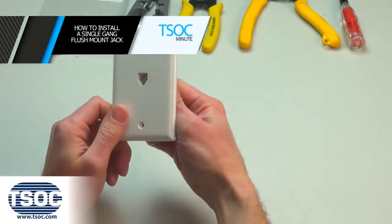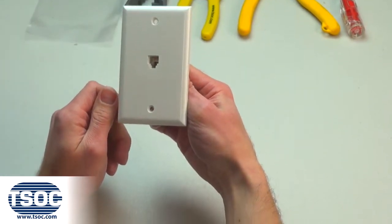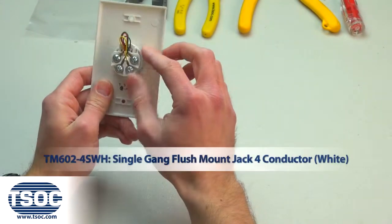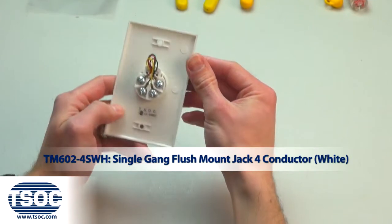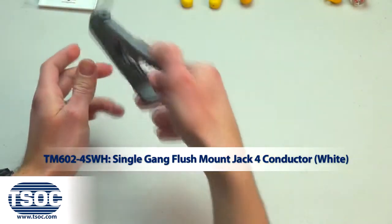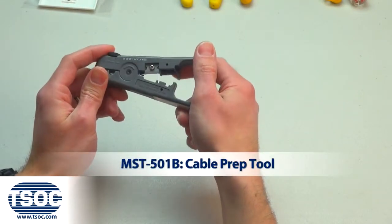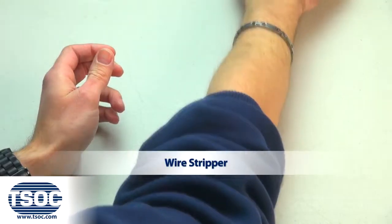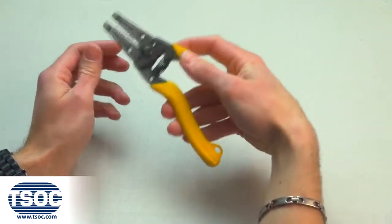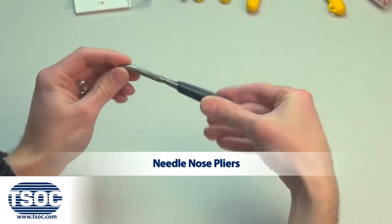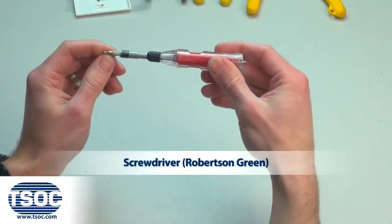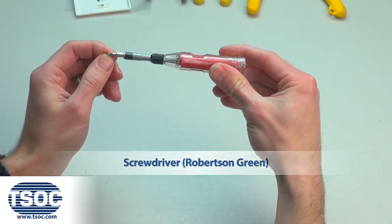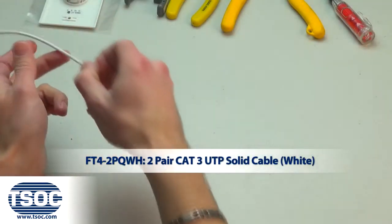How to install a single gang flush mount jack. Materials required: single gang flush mount jack four conductor in white, cable prep tool, wire stripper, needle nose pliers, Robertson screwdriver, green two pair Cat 3 UTP solid cable white.